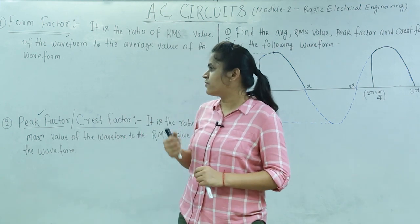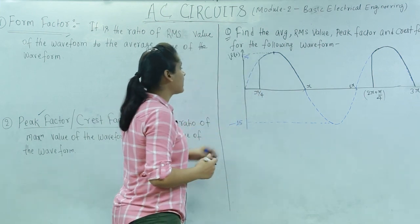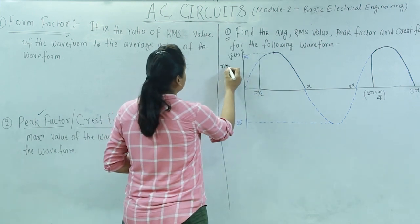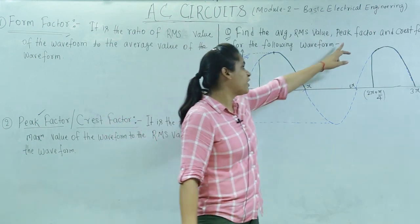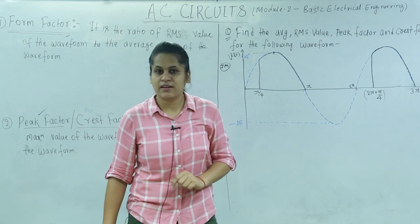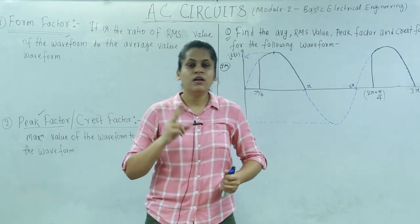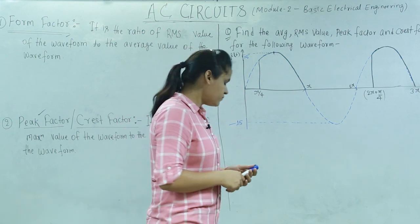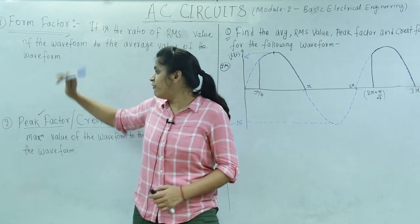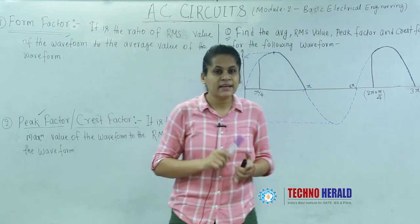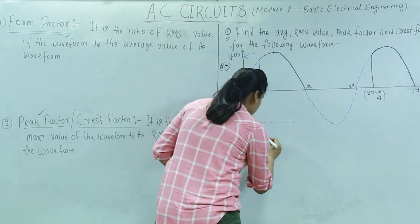Sometimes they ask in a seven-mark numerical as well — like this numerical I have written here, which was asked in your AKU semester examination, where they are asking for peak factor and form factor as well. So these kinds of secondary things they ask for two marks. Let us see what is form factor and peak factor. Before starting, let me remind you what was average value and RMS value.